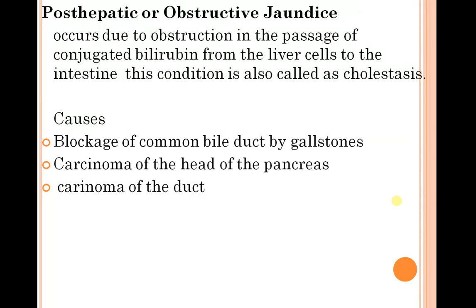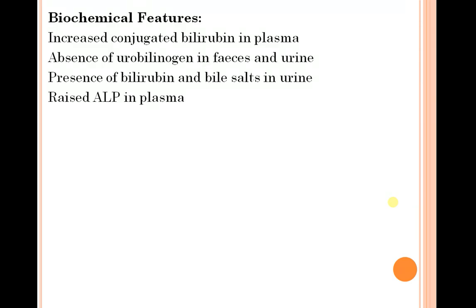Post-hepatic or obstructive jaundice occurs due to obstruction in the passage of conjugated bilirubin from the liver cells to the intestine, also called cholestasis. Causes include blockage of the common bile duct, gallstones, and carcinoma of the head of the pancreas or bile duct. Biochemical features include increased conjugated bilirubin in plasma and absence of urobilinogen in feces and urine.